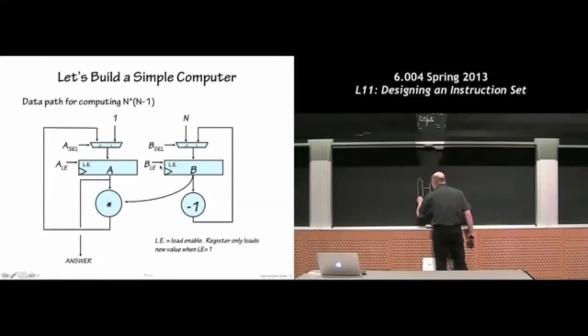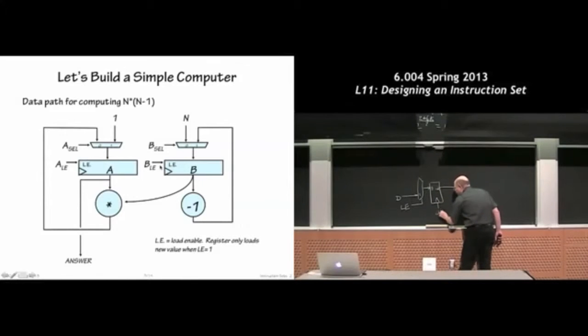But internally, what the register looks like is this: Here's the LE signal. It controls a MUX. And when LE is 1, the incoming data value is routed into the register. And that's what gets loaded at the rising edge of the clock. When LE is 0, we actually take the output of the register and reload it with itself.